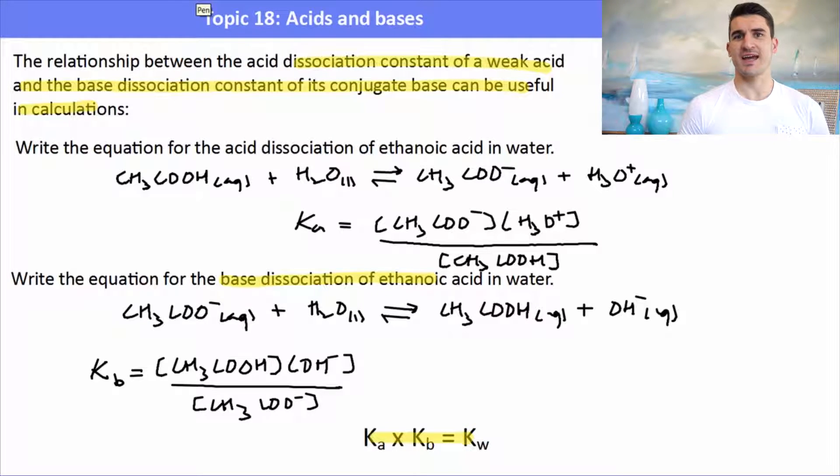Now remember that Kw is 10 to the minus 14 at 298 Kelvin, so if we're given the Ka then we can calculate the Kb. So we can rearrange as long as they tell us it's at 298 Kelvin or we assume it's at 298 if they don't specify otherwise.